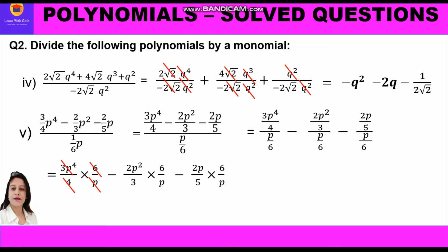Simplifying: for the first term, p⁴/p = p³ and 4 and 6 cancel by 2 giving 3×3/2 = 9/2, so 9/2·p³. For the second term, p²/p = p and 2×6/3 = 4, giving -4p. For the third term, p cancels and 2×6/5 = 12/5, giving -12/5. The overall answer is 9/2·p³ - 4p - 12/5. We have now completed dividing both monomials by a monomial and polynomials by a monomial.